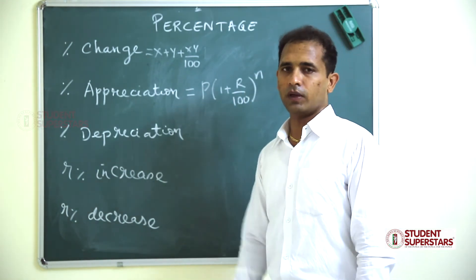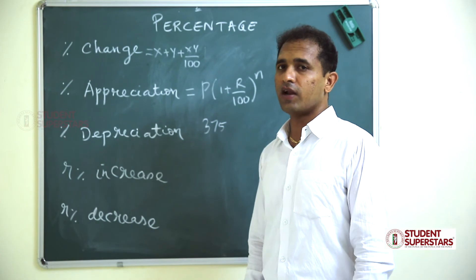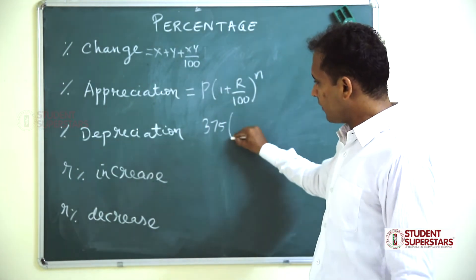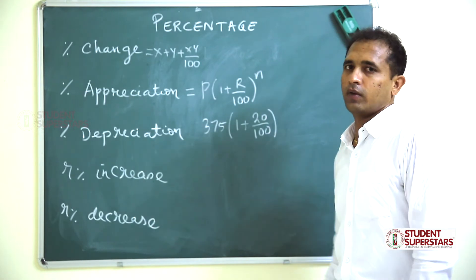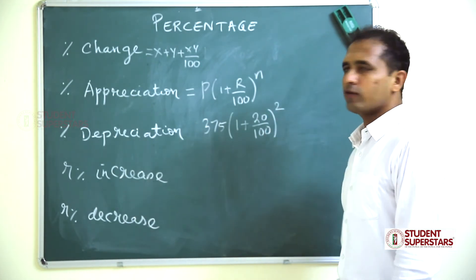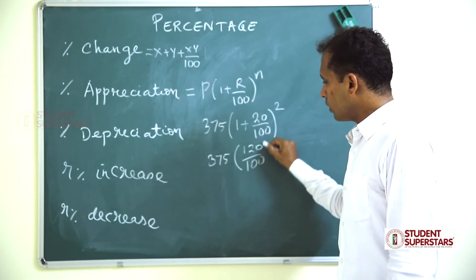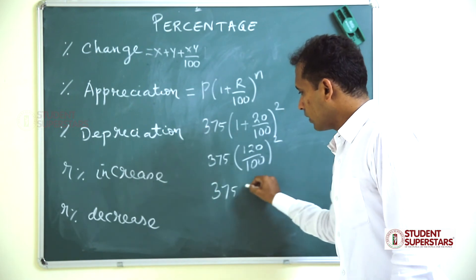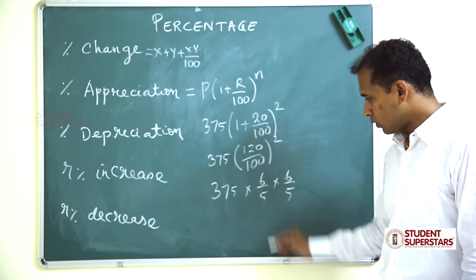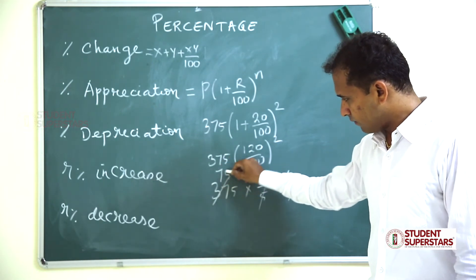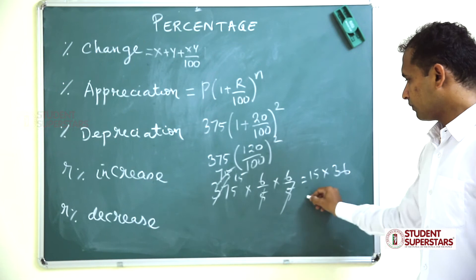For example, a papaya tree is 375 centimeters and it increases by 20 percent every year. What is the length after two years? Using the formula: 375 × (1 + 20/100)² = 375 × (6/5) × (6/5) = 15 × 36 = 540 centimeters.